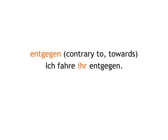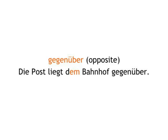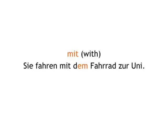Entgegen — contrary to, towards: Ich fahre ihr entgegen. I'm driving towards her. Gegenüber — opposite: Die Post liegt dem Bahnhof gegenüber. The post office is opposite the railway station. Mit — with: Sie fahren mit dem Fahrrad zur Uni. They go by bike to uni.